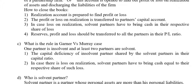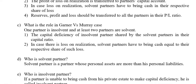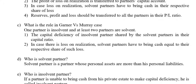Who is a solvent partner? A solvent partner is a partner whose personal assets are more than his personal liabilities. Who is an insolvent partner? If a partner is unable to bring cash from his private estate to make good the capital deficiency, he is known as an insolvent partner.